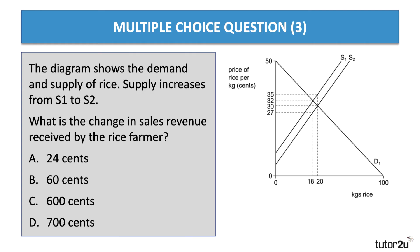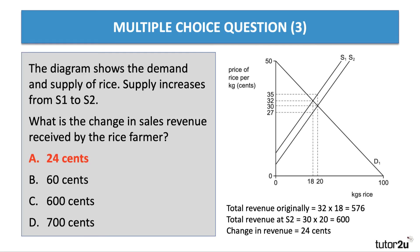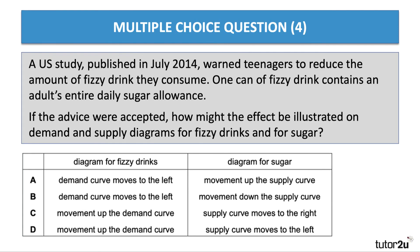Question three: the diagram shows the demand and supply of rice. Supply increases from S1 to S2 — perhaps due to a favorable harvest. The question asks: what is the change in sales revenue received by the rice farmer? Supply shifts out from S1 to S2; market price falls from 32 cents to 30 cents per kilogram, and quantity bought increases from 18 to 20. The correct answer is a net change of 24 cents — original revenue was 32×18, new revenue is 30×20.